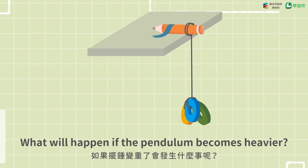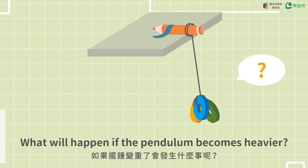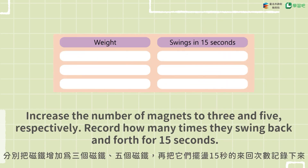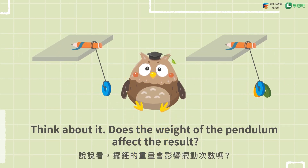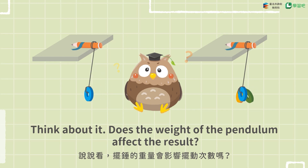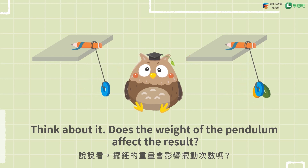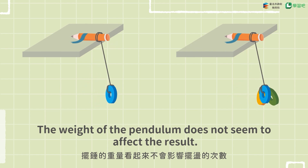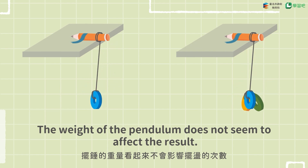What will happen if the pendulum becomes heavier? Increase the number of magnets to 3 and 5 respectively. Record how many times they swing back and forth for 15 seconds. Think about it — does the weight of the pendulum affect the result? The weight of the pendulum does not seem to affect the result.